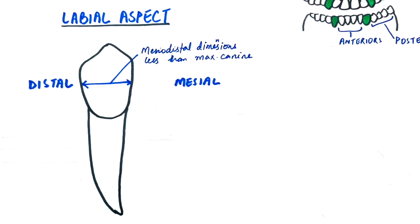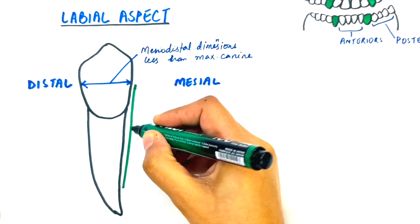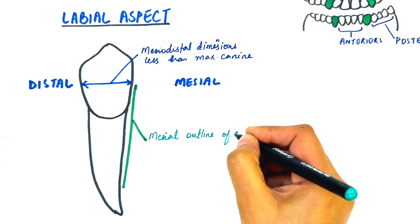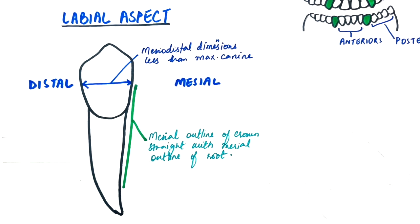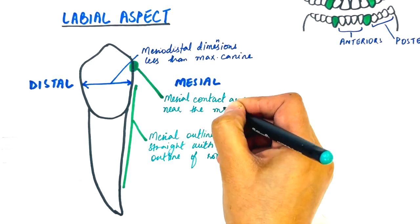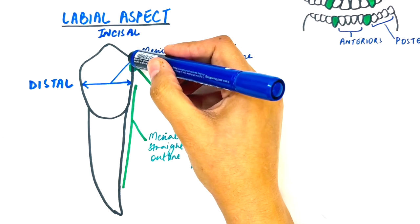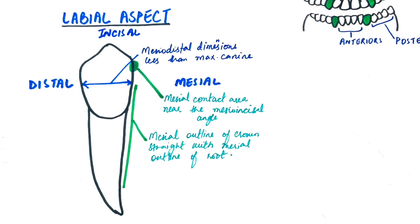The mesial outline of the crown is almost straight with the mesial outline of its root. And the mesial contact area is located near the mesio-incisal angle. The meso-incisal angle is formed by the union of the mesial and incisal outlines of the tooth. The mesial contact area on the maxillary canine is however at the junction of the middle and incisal thirds.